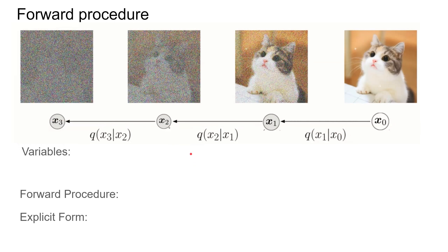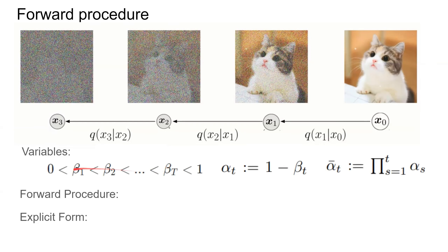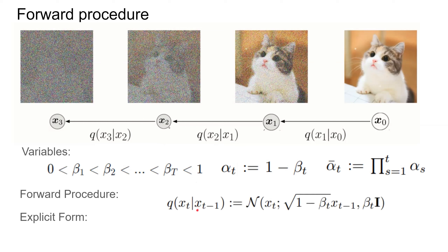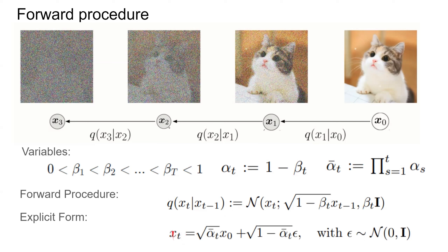Going from X_0 to X_1 to X_2 to X_3. The first variable is beta, which is the variance schedule — it controls the variance of the Gaussian noise during the forward procedure. Then alpha_t and alpha_t_bar are variables based on beta, an adaptation of the variance schedule. In the forward procedure, this is how we approximate the next image, approximated by a Gaussian form. We can also write it in a closed-form, meaning we can directly write down what X_T is without going through the procedure iteratively step by step. Eta is just the noise.